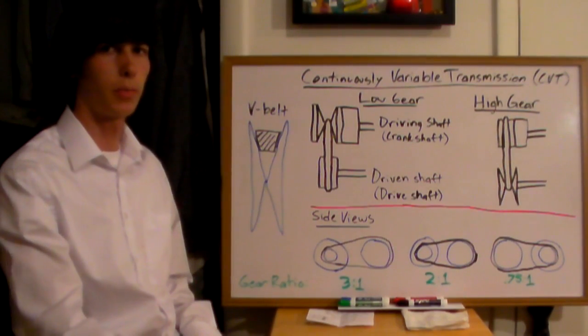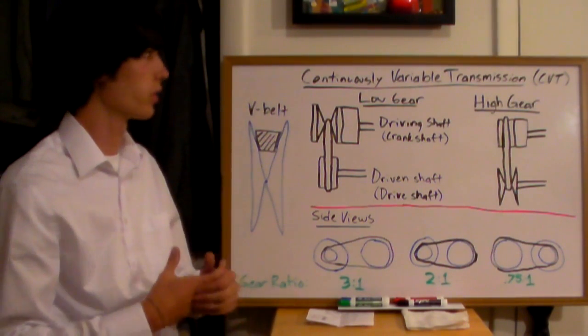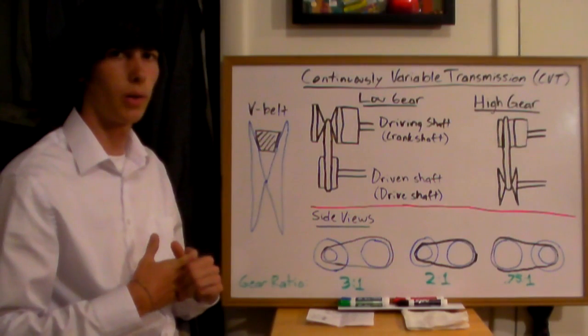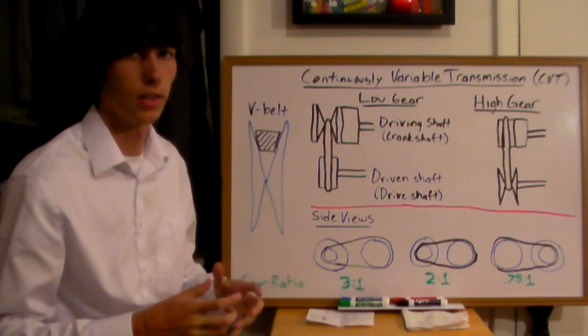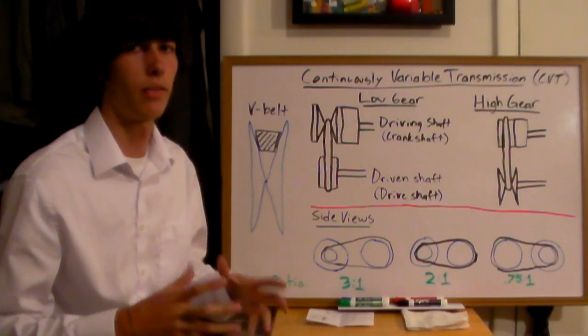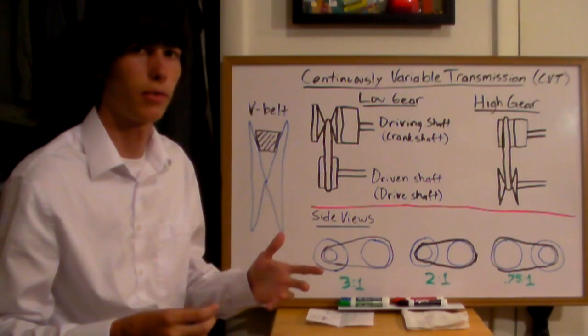This video will help explain continuously variable transmissions. Continuously variable transmissions, or CVTs, are transmissions which don't have a set number of gears, like you might find in your car.